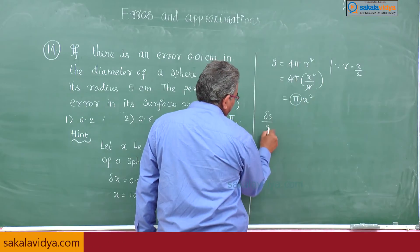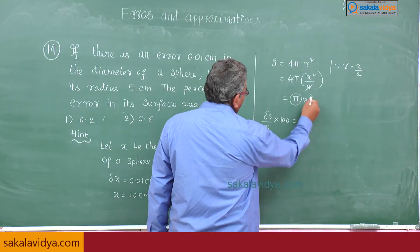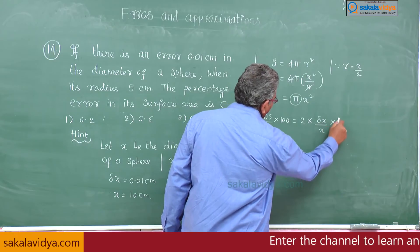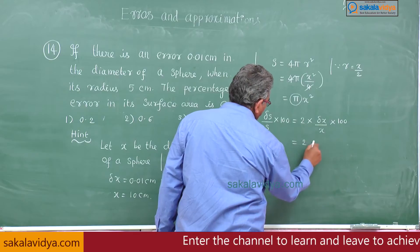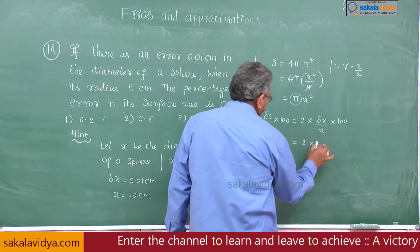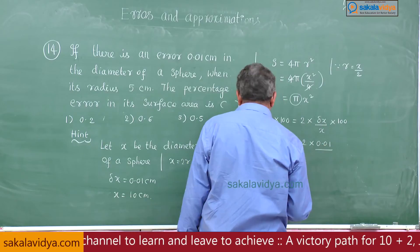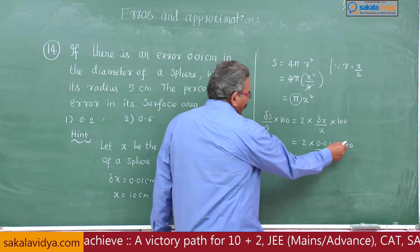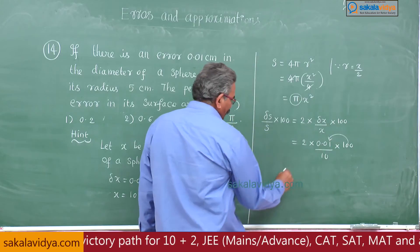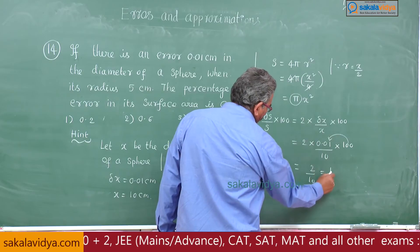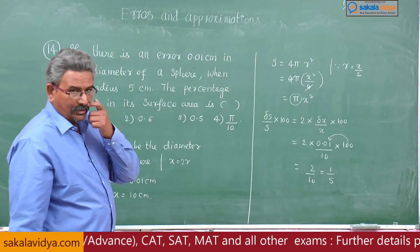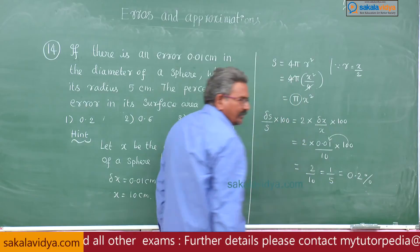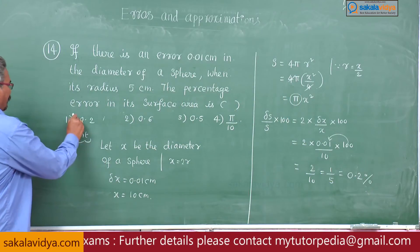Since pi is constant, delta s by s into 100 equals 2 times delta x by x into 100. Substituting: 2 times 0.01 divided by 10, times 100. This gives 2 by 10, which is 1 by 5, written as 0.2 percent. So the first option is correct.